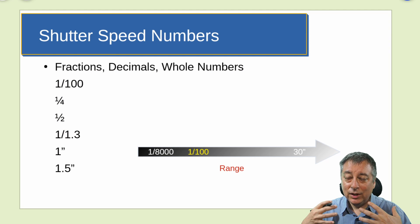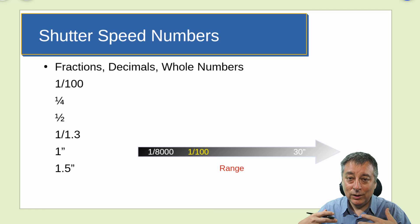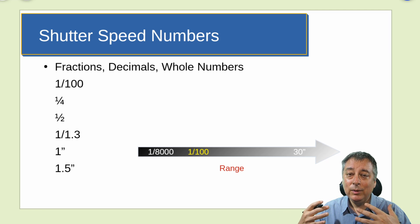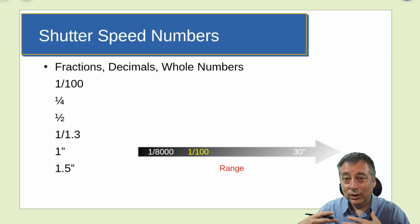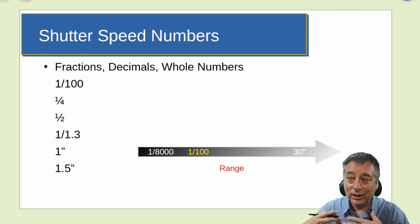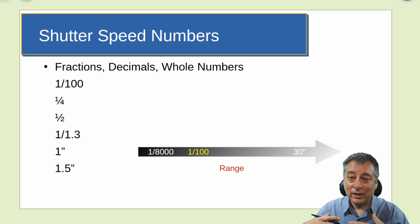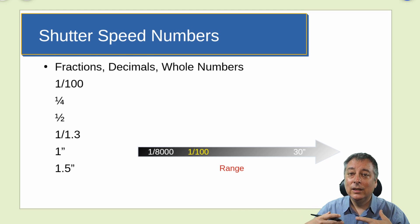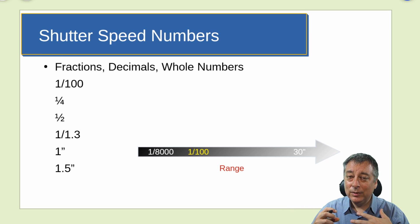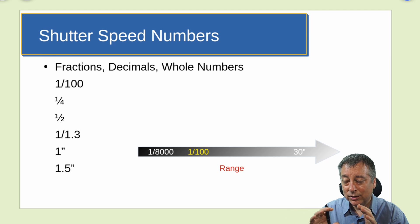Shutter speed numbers are generally expressed as fractions like 1/100, 1/500, 1/1000 of a second, but you can also work in decimals or whole numbers once you get into the few-seconds range — like 1 second, 2 seconds, 1.5 seconds. You have to be a little careful because it can get confusing on camera displays, which I'll show you in just a minute.